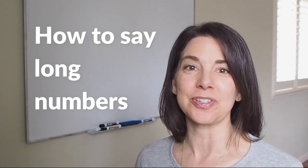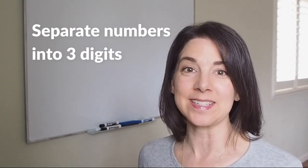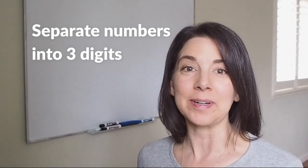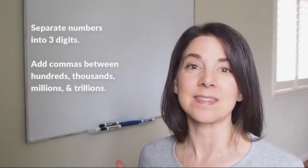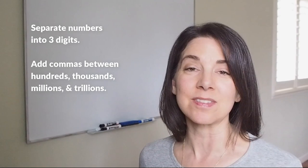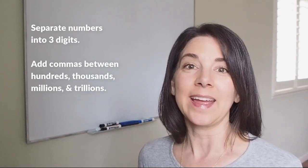When you're saying numbers in English, you want to be sure to separate them into groups of three digits. Add a comma to indicate thousands, millions, billions, trillions, and to be sure to say the number correctly.